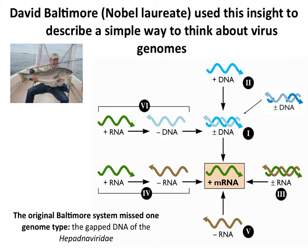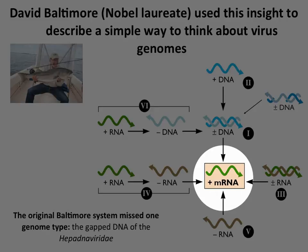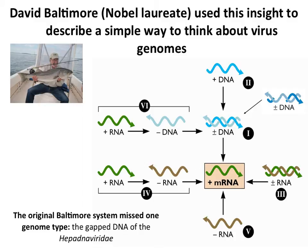David Baltimore, who was a Nobel laureate for discovering an enzyme we'll talk about later in another lecture, used this insight — the idea that every virus has to make mRNA — to organize all the known viral genomes into a scheme, nicely called the Baltimore Scheme. He put mRNA in the middle, saying every genome has to lead to this. Then he arrayed around it all the known genomes. This was in the 1970s.